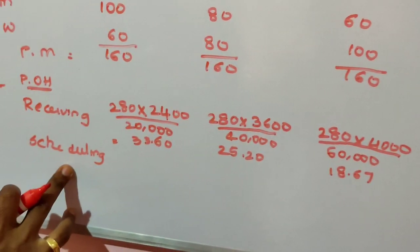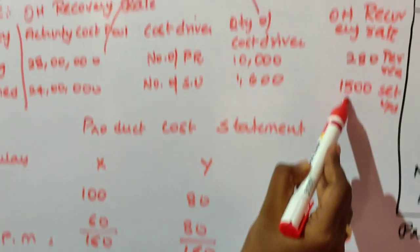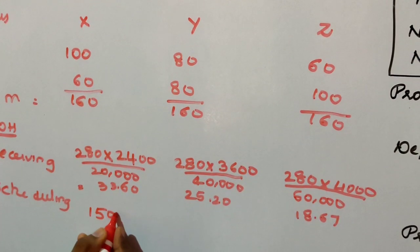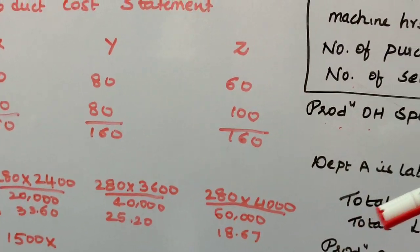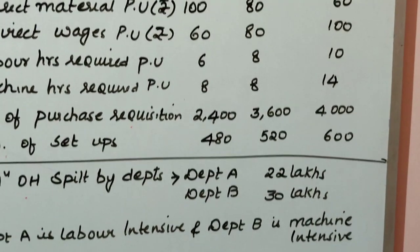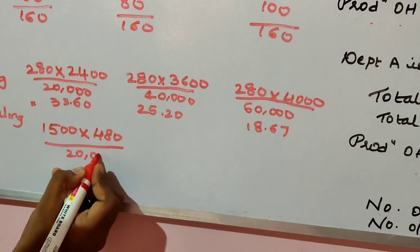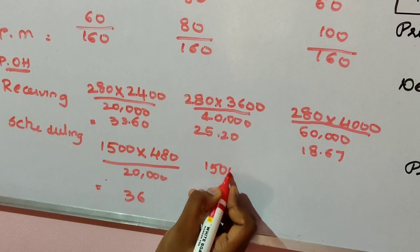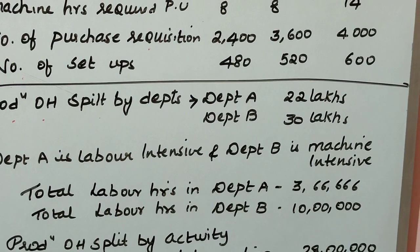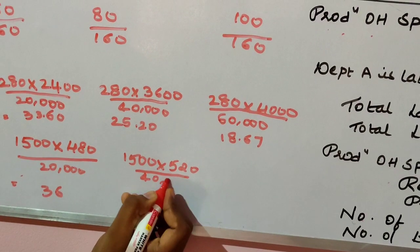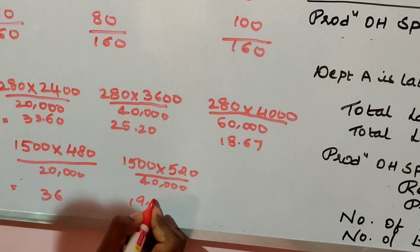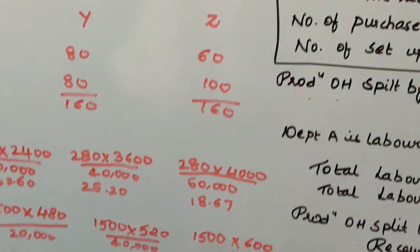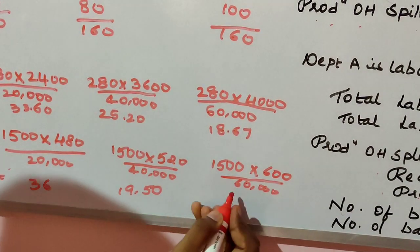For the scheduling activity, overhead rate is ₹1,500. For product X: 1,500 × 480 setups ÷ 20,000 = ₹36. For product Y: 1,500 × 520 ÷ 40,000 = ₹19.50. For product Z: 1,500 × 600 ÷ 60,000 = ₹15. These are the scheduling overhead costs per unit for X, Y, and Z.